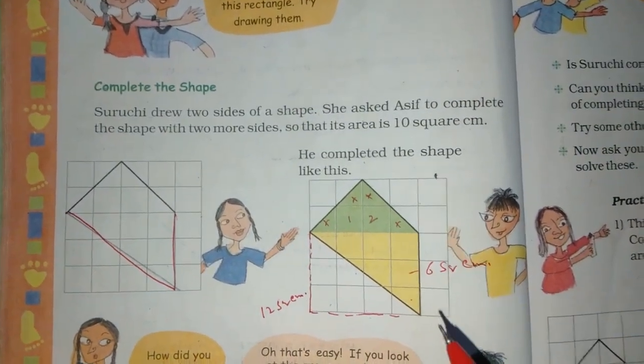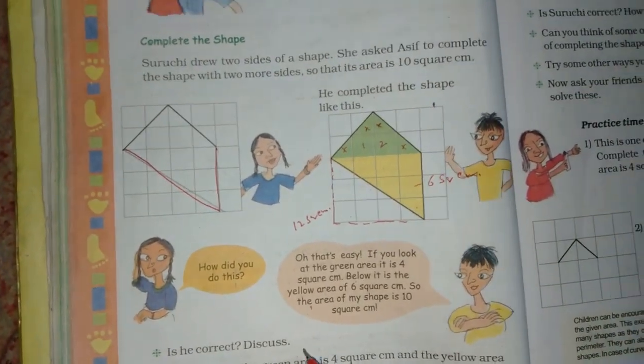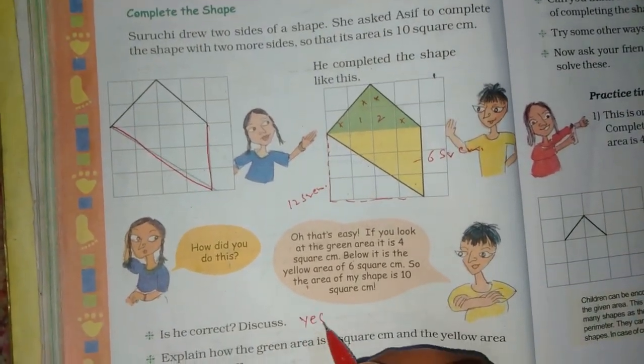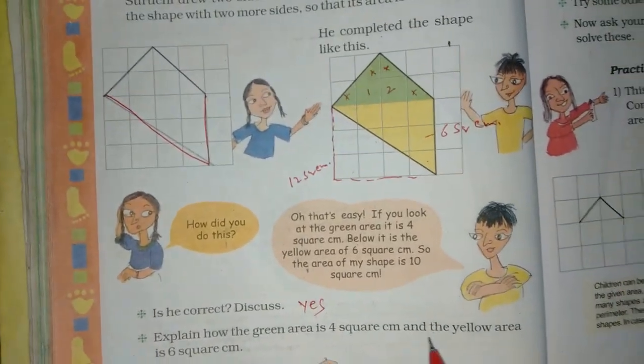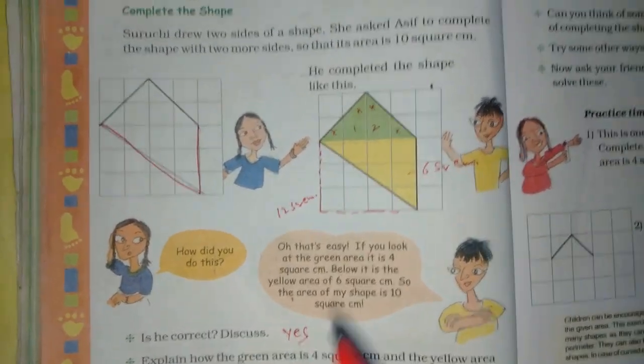6 plus 4 is 10. Explain how the green area is 4 square centimeters and the yellow area is 6 square centimeters.